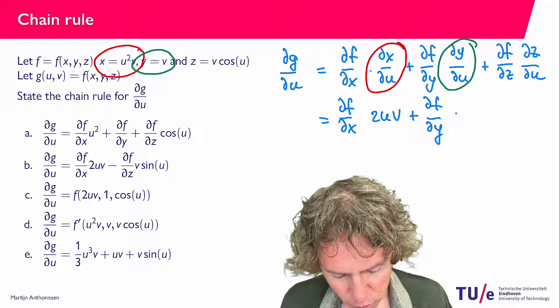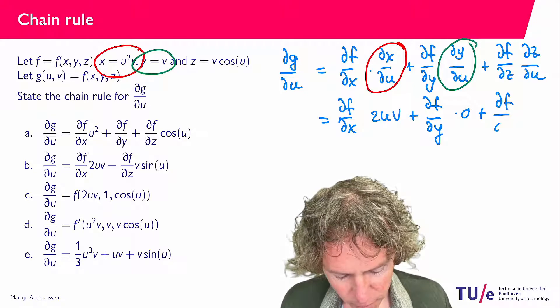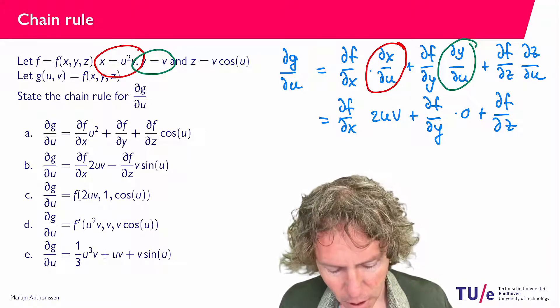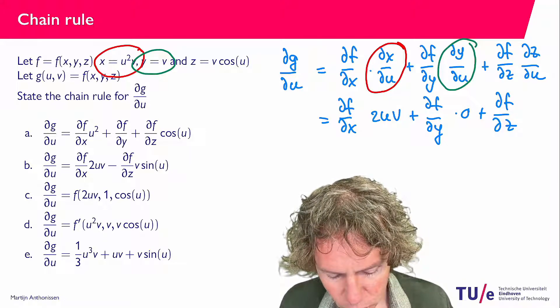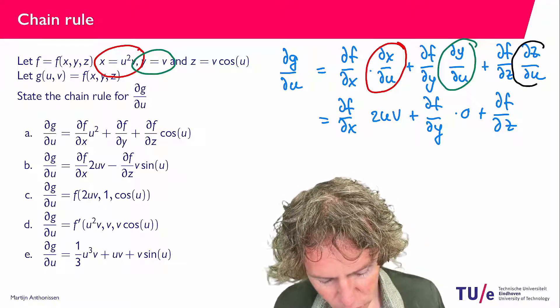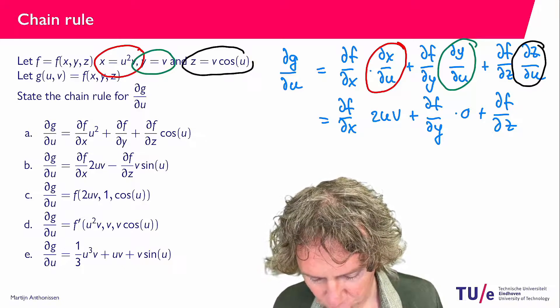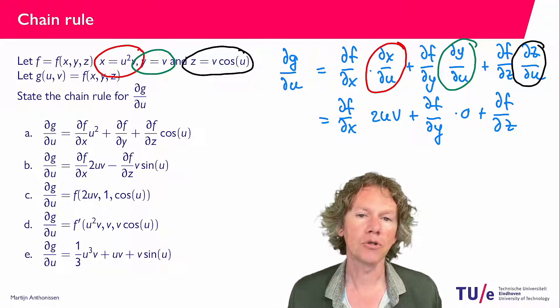Times 0 plus finally ∂f/∂z, and then I need to differentiate z with respect to u, and this is the expression we have: v times cosine u.